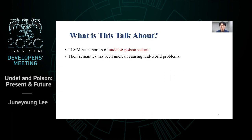LLVM has two special values, Undef and Poison, which were introduced in the past to enable important compiler optimizations. It has been a great success, and now we can see optimizations that use Undef and Poison everywhere in LLVM. But ironically, they increasingly became the source of miscompilations as well.